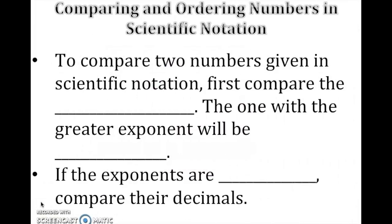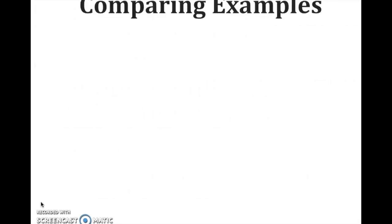Today we're going to look at comparing and ordering numbers in scientific notation. Let's look at a couple of steps we need to follow. To compare two numbers given in scientific notation, first compare the exponents — the one with the greater exponent will be larger. If the exponents are equal, compare their decimals.